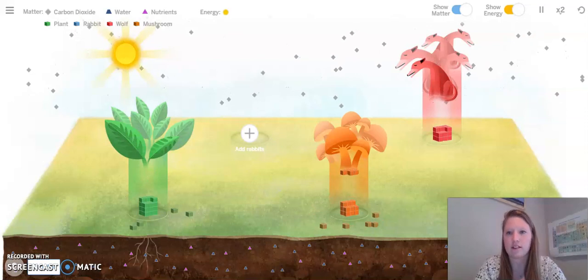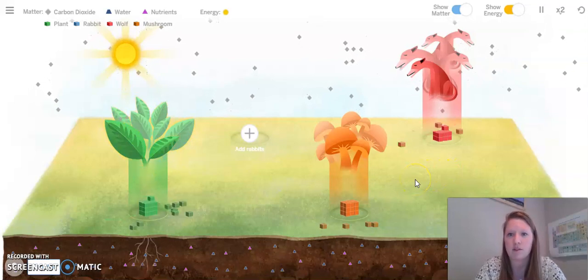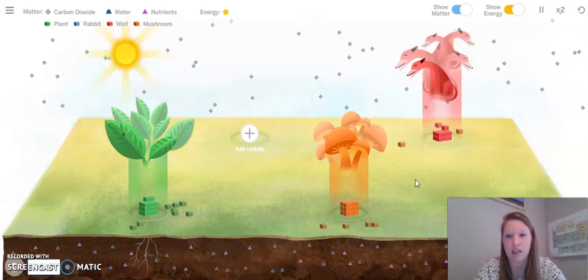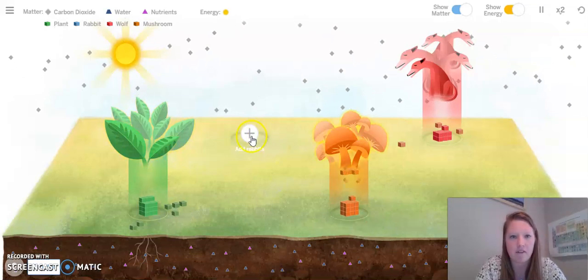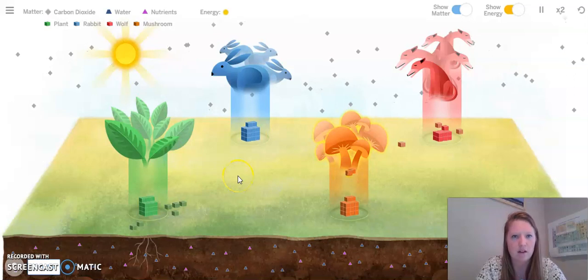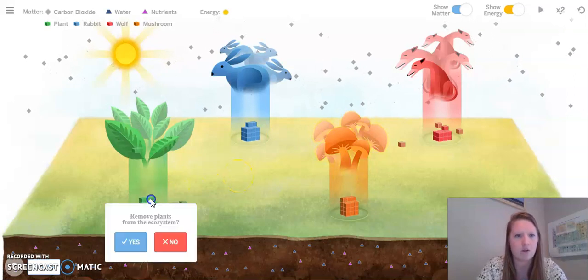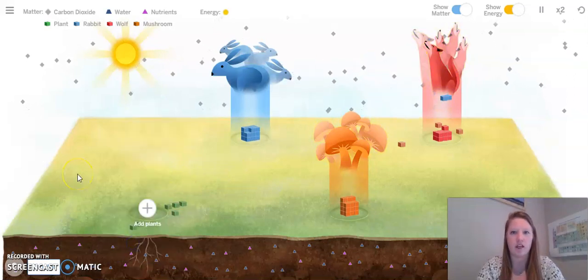I can start to see that the wolves are starting to look a little droopy. Maybe this represents that they're dying because they don't have any rabbits to eat. I wonder what happens if I put the rabbits back and then remove the plants from the ecosystem.